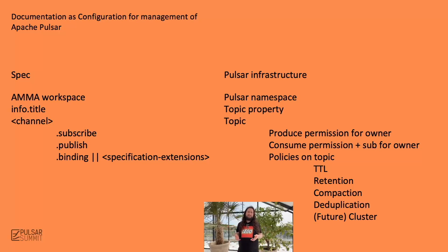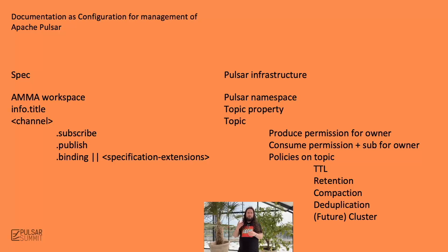So how do we actually map things? We map AMA workspaces directly to Pulsar namespaces. We take the title of the AsyncAPI specification and put it as a property on every topic created from that specification. Channels we map one-to-one to topics and create one for each. We use the subscribe and publish properties to set the correct permissions on the broker: if it's a subscribe channel, we set produce permissions for the owner; if it's a publish channel, we set consume permissions for the owner and add a subscription for them. We use bindings and specification extensions to set the time period, retention, compaction, deduplication, and in the future, which clusters to replicate this topic between.